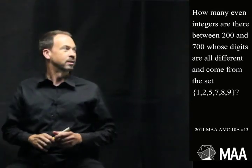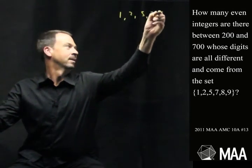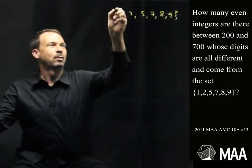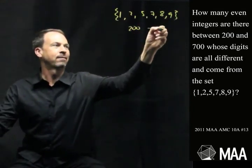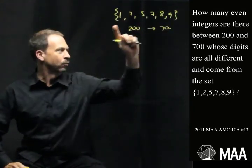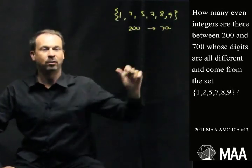Okay, let me process that question. So we've got the set of numbers 1, 2, 5, 7, 8, 9. So we're asking for even integers between 200 and 700 that have different digits, but using digits from that set. So even integers twixt 200 and 700.